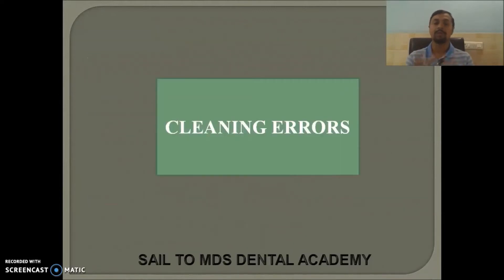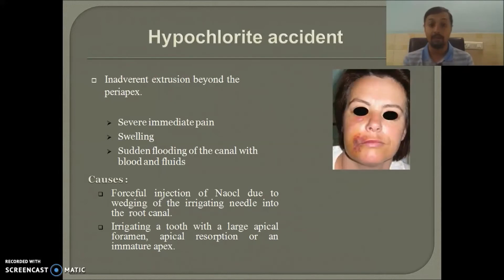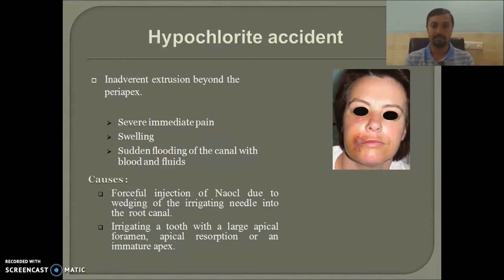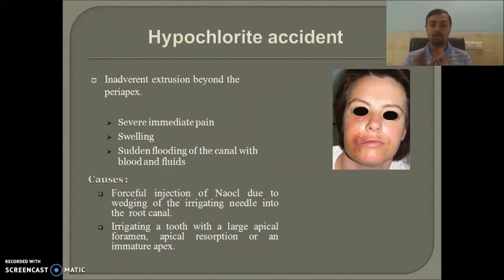The standard irrigant regimen is 0.1 to 5.25% sodium hypochlorite along with 17% EDTA. When irrigants extrude beyond the periapex — most commonly hypochlorite followed by chlorhexidine — if hypochlorite gets extruded beyond the periapex, it causes immediate pain, swelling of the associated area, and sudden flooding of your canal with blood and fluids.